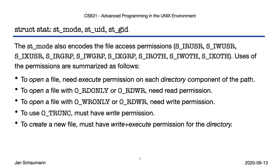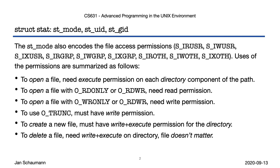To create a new file, you need write and execute permissions on the directory in which you're creating the file. This should make sense, since creating a file requires you to add an entry in the directory — to write into this directory. To delete a file, the same holds true, and this is perhaps somewhat counterintuitive. The permissions on the file itself do not matter. This is because deleting a file does not really change the file; it changes the directory the file is in. All you're doing when deleting a file is editing the directory and removing the link inside the directory.